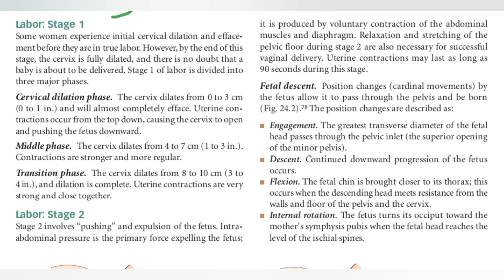Stage One is divided into three major phases. Number one is the cervical dilation phase. In this phase, the cervix dilates from zero to three centimeters, or zero to one inch, and almost completely effaces. Uterine contractions occur from top to bottom, causing the cervix to open and pushing the fetus downward. Next is the middle phase, where the cervix dilates from zero to seven centimeters, or one to three inches.